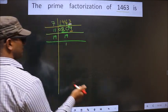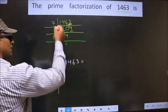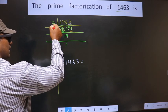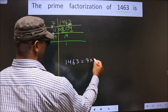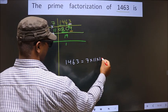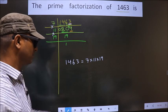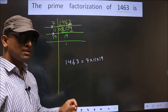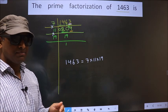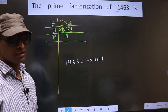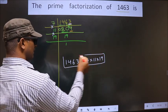So now the prime factorization of 1463 is the product of these numbers — that is, 7 into 11 into 19. This is also called the product of prime numbers of 1463. So, this is our answer.